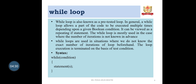While Loop: The while loop is also known as a pre-tested loop. It allows a part of the code to be executed multiple times depending upon a given boolean condition, and can be viewed as a repeating if statement. The while loop is mostly used when the number of iterations is not known in advance. The loop execution is terminated on the basis of the test condition. Syntax: while(condition) { statement block; }. The statement block executes only when the condition is true; otherwise it terminates.